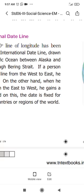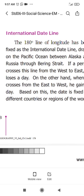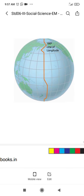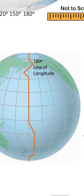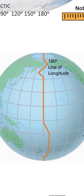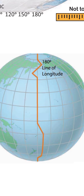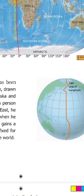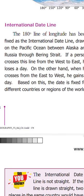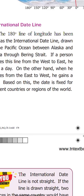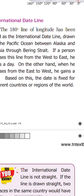The international date line is drawn on the Pacific Ocean between Alaska and Russia, through the Bering Strait. It passes between Alaska, which is in North America, and Russia, through the Bering Strait. If a person crosses this line from west to east, he loses a day.